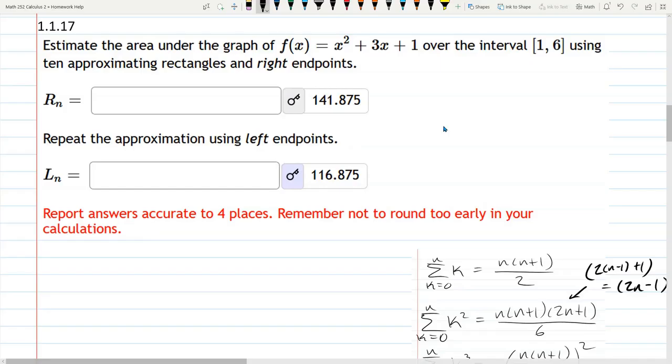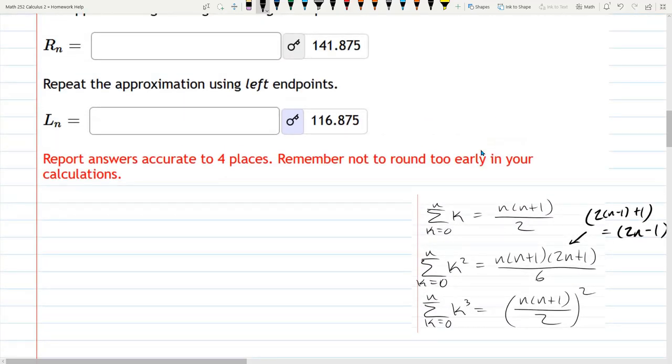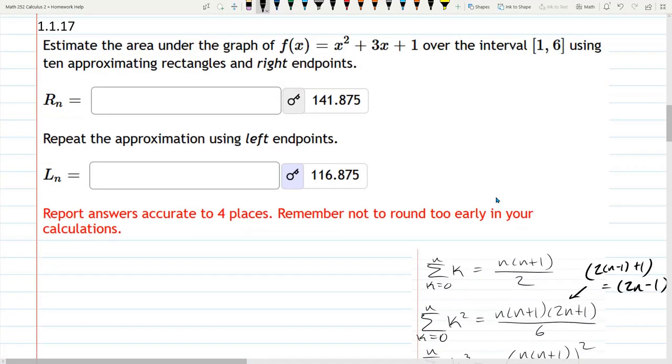We're about to estimate this quadratic function over the interval 1 to 6, and we're going to use 10 approximating rectangles and right endpoints. I have the formulas, we're going to use the Riemann sums down here in the lower right. You don't need to re-index these to n-1, it's just fine because we're going to have a number here.